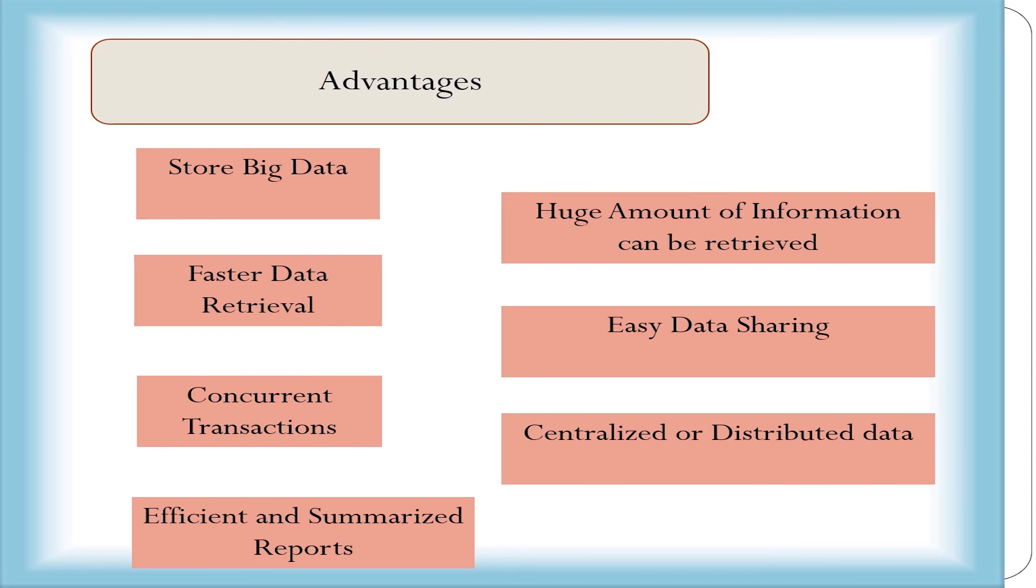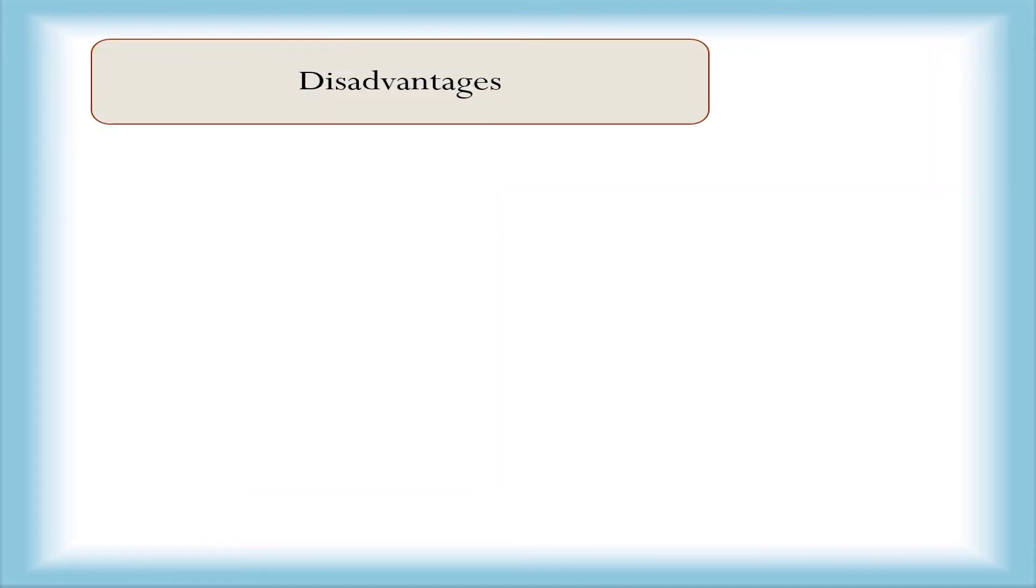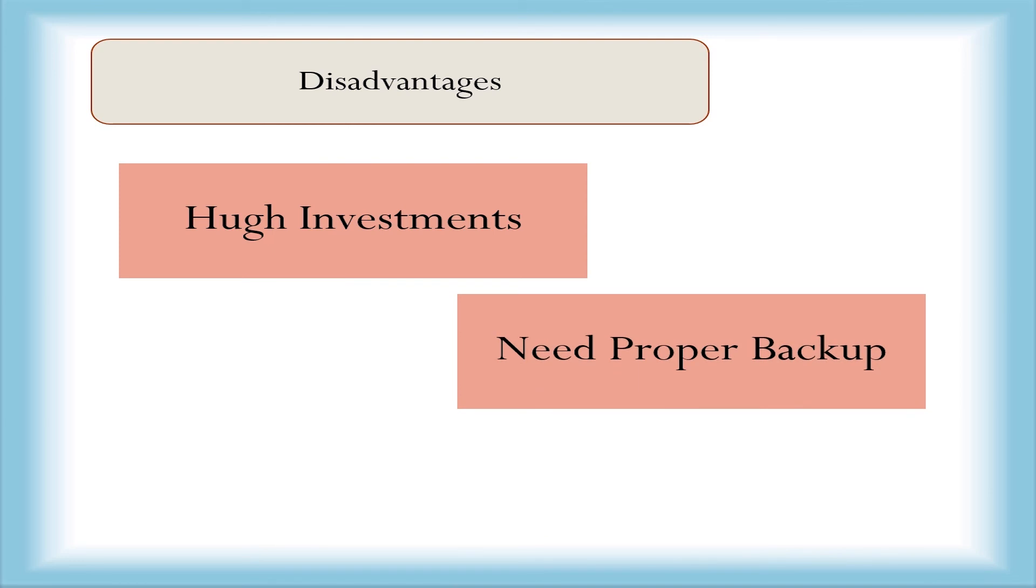Information systems have certain disadvantages. Some of them include: number one, they require a huge investment for setup at the time of implementation of the information system; number two, proper backup systems are needed; number three, trained system analysts, programmers, and helping staff are required.